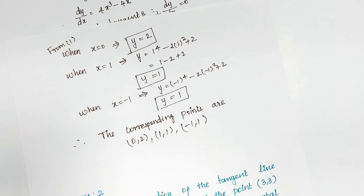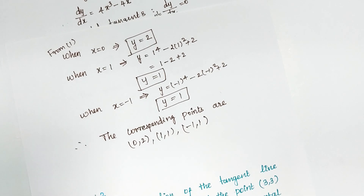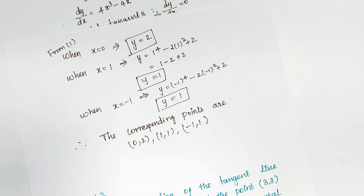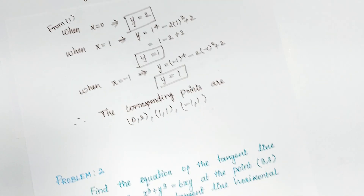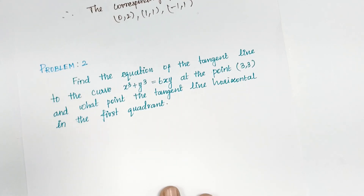They may ask this in 2 marks. Horizontal tangent line is given; based on that, you can find the points which make a horizontal line.